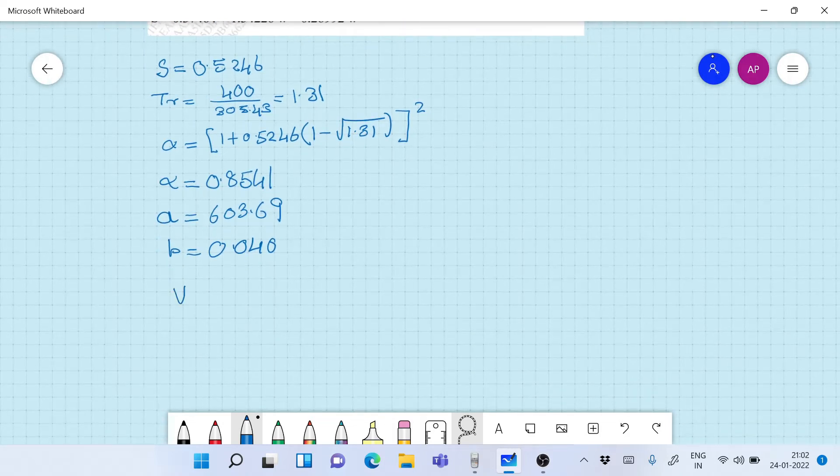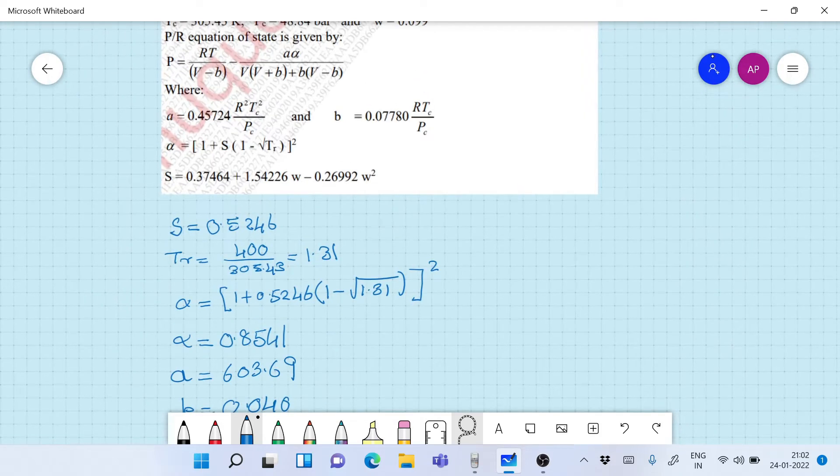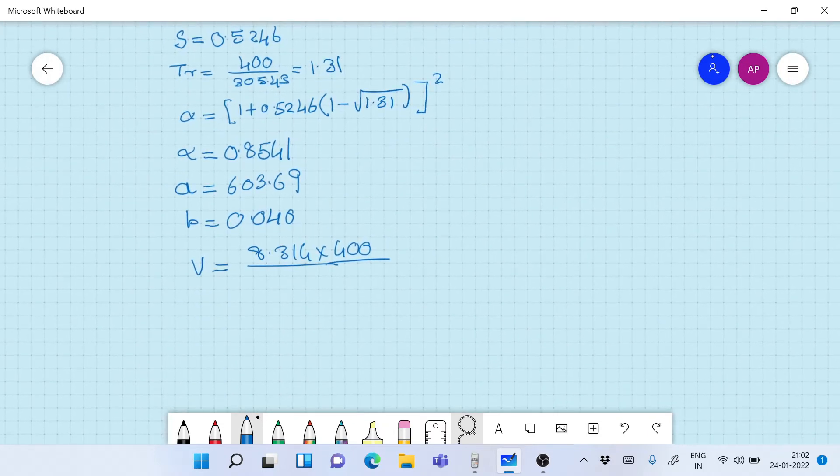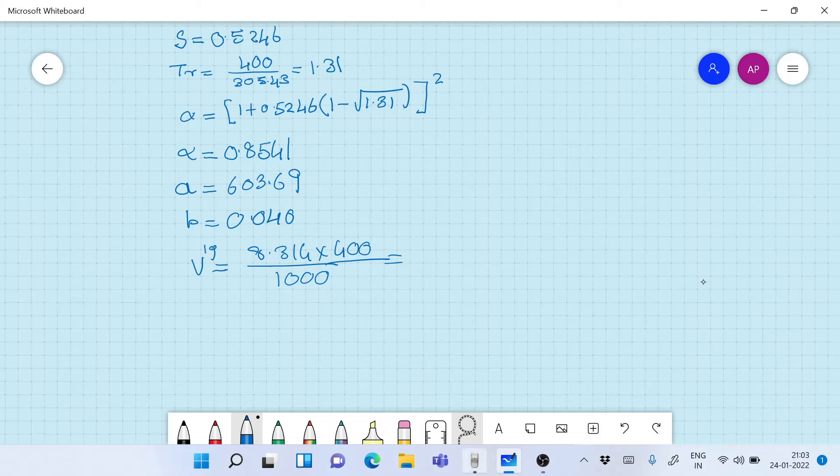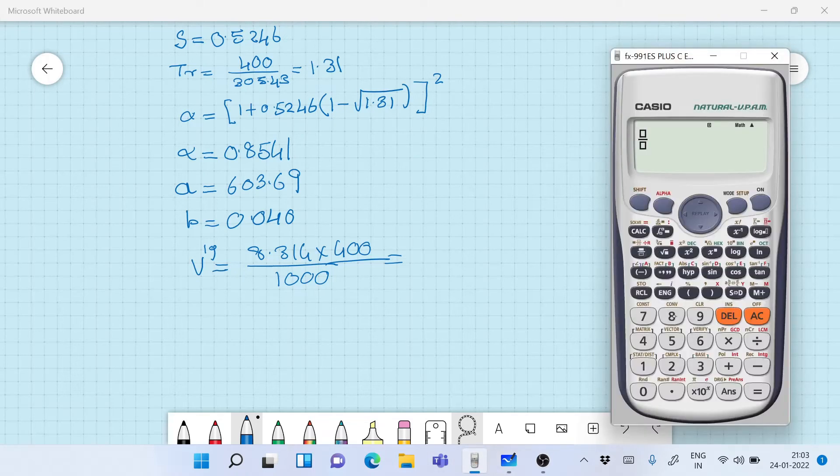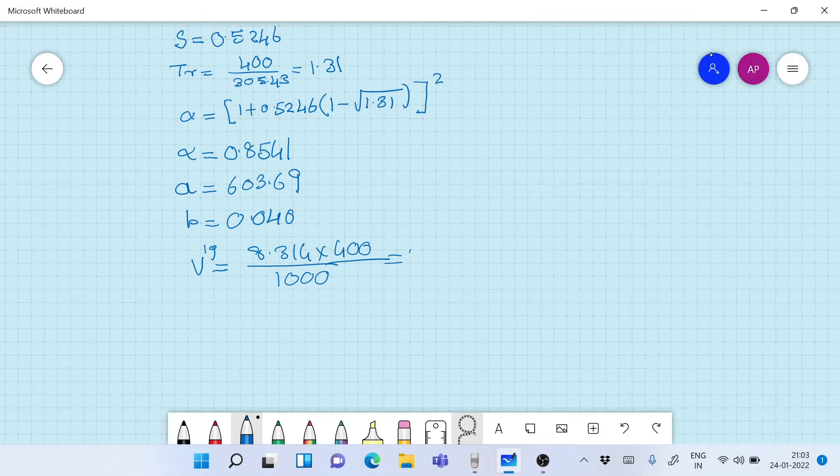Now it would be advantageous to calculate the ideal gas volume and you will understand why I am doing it. So that's 8.314 into 400 Kelvin divided by the pressure at which we need to find out the volume. That's 1 megapascal, so let's take it as 1000 kilopascals. We now calculate the ideal gas volume: 8.314 into 400 divided by 1000. So that's 3.3256. V ideal gas is equal to 3.3256 meter cube per kilomole.